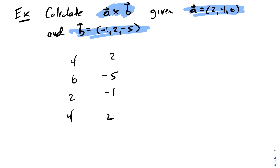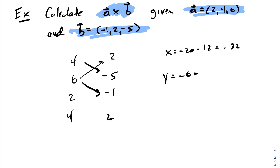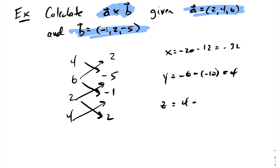Now going ahead and calculating the cross product. The x-coordinate is the down product, which is -20, minus the up product, which is 12, so we get -32. For the y-coordinate, we have the down product, which is -6, minus the up product, which is -10, which comes out to be 4. And for the z-coordinate, we have the down product, which is 4, minus the up product, which is -4, which comes out to be 8. Therefore, a cross b is equal to the vector (-32, 4, 8).